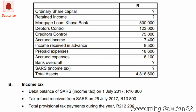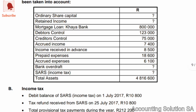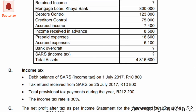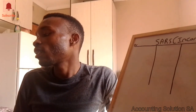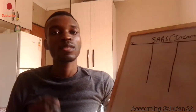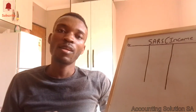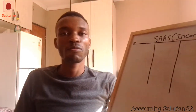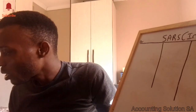Let's go to information B. They said a debit balance of SARS income tax on 1 July 2017 was 10,800. A tax refund received from SARS is also 10,800. Then we have total provisional tax payments — I'll explain that in detail. The income tax rate is 30%, and the net profit after tax from the income statement is 604,800. They give us net profit after tax because the income tax amount wasn't given directly, so we calculate it using the 30% rate.